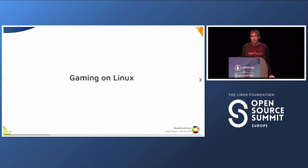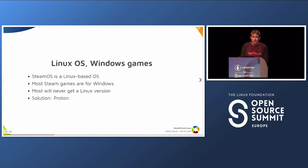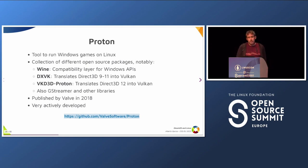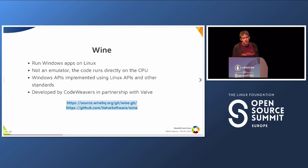Going back to the main use case — playing games on Linux — there's a problem: most Steam games are for Windows, and most will never get a Linux version, either because developers won't do it or because many games are too old to be updated. The solution is Proton — a tool to run Windows games on Linux, developed by Valve and published in 2018. It's a collection of different open source packages. The most important ones are Wine, which is the complete Windows compatibility layer, a couple of projects that translate Direct3D calls into Vulkan, and GStreamer and other libraries.